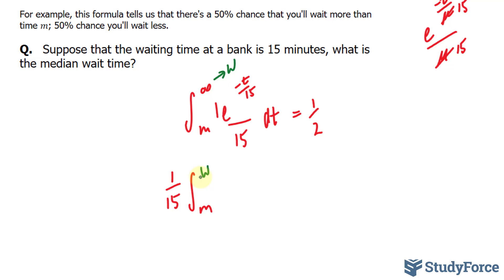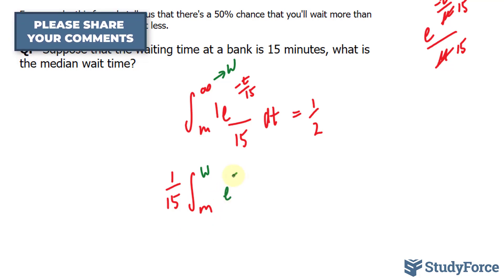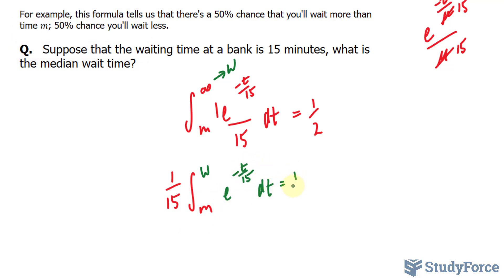Because this is an improper integral, I'll be using a limit at the very end. So I have the integral from m to w of e to the power of negative t over 15, dt, equals one-half.